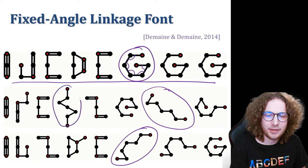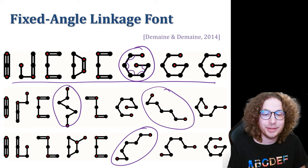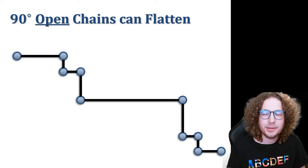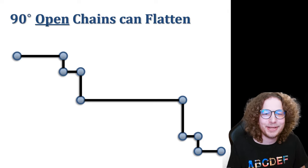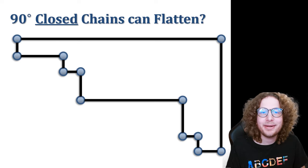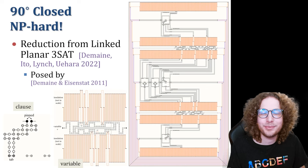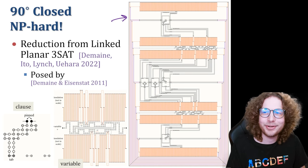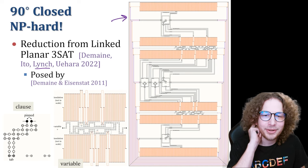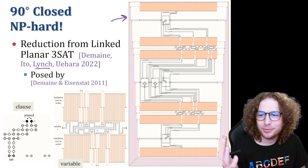Given one of these linkages, it's a puzzle to figure out what letter it folds into. It turns out a given linkage can only fold into one specific letter. And there's a new theorem about fixed-angle chains: if you take a 90-degree open chain, you can always flatten it with a zigzag pattern, but for a closed chain the problem is NP-hard. Deciding whether a closed chain with links of varying lengths can be folded flat is NP-hard — this is with Jason Lynch, Hiro Ito, and Rihei Urahara, finally solving a problem from 11 years earlier.